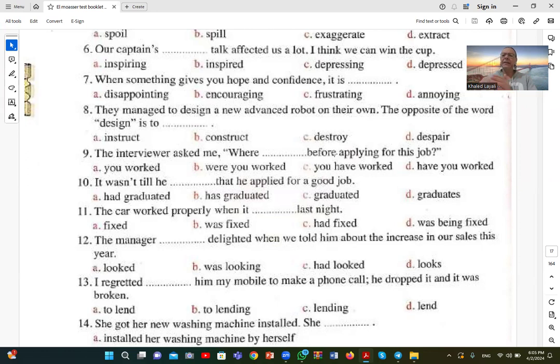Number eleven: The car worked properly when it was fixed last night. It's passive voice in the past, so was or were plus the third form of the verb: was fixed. B is the correct answer.